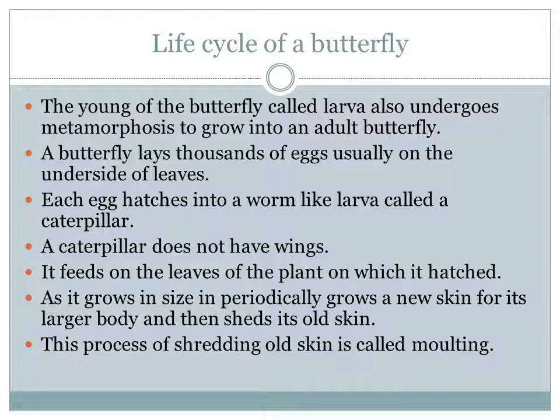So what are the things we discussed yesterday? We discussed what do you mean by the term reproduction, what are oviparous animals and viviparous animals. We have seen the parts of an egg — egg white, yolk, and eggshell. Then we have seen about the life cycle of chick and frog, and I have given some activity to you. Have you all completed that activity? I will check that one, and now we will discuss about the life cycle of a butterfly.